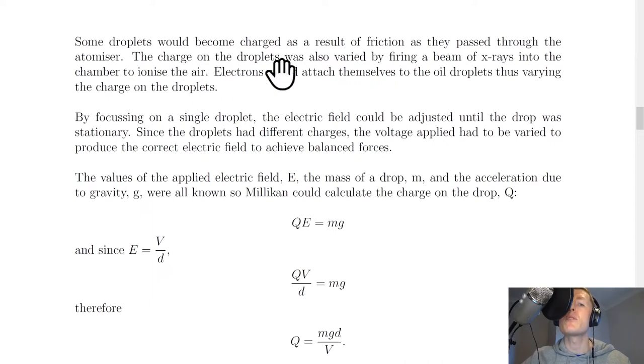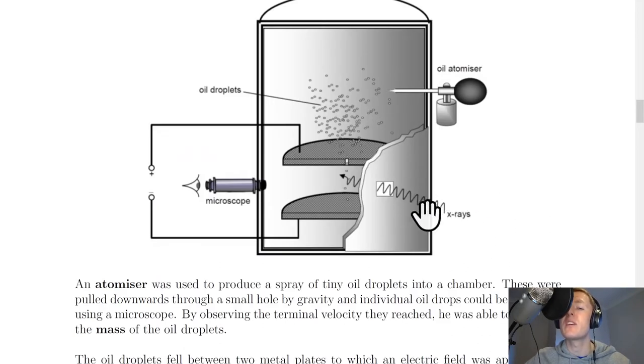Some droplets would become charged as a result of friction as they passed through the atomizer. The charge in the droplets was also varied by firing a beam of X-rays into the chamber to ionize the air. Electrons would attach themselves to the oil droplets thus varying the charge on the droplets.